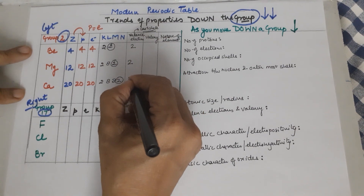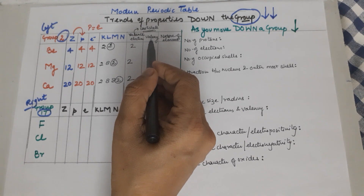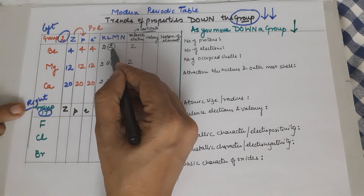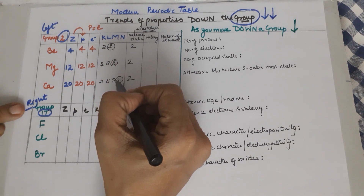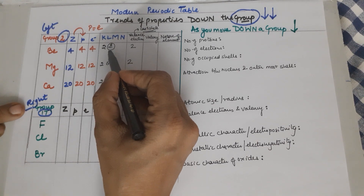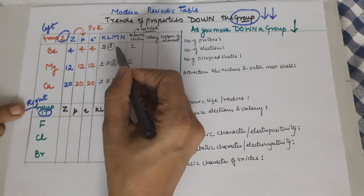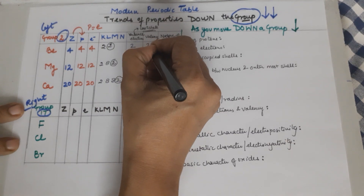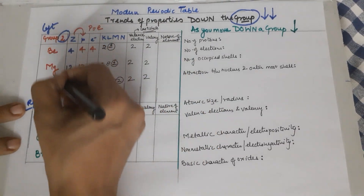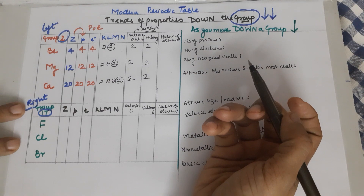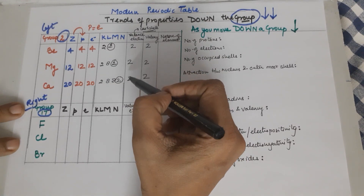So the valence electrons remain constant down the group. Coming to valency — valency is the combining capacity of an element. You calculate it as either equal to the valence electrons or equal to 8 minus the valence electrons, whichever is less. The valence electrons here are 2, and 8 minus 2 is 6. Since 2 is smaller, the valency is 2 for all three elements. Since the valency is 2, they will have similar chemical properties.